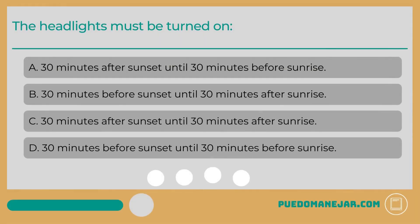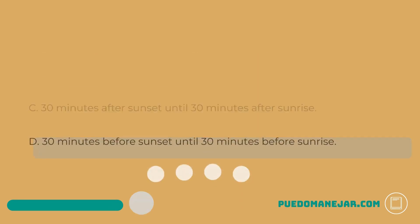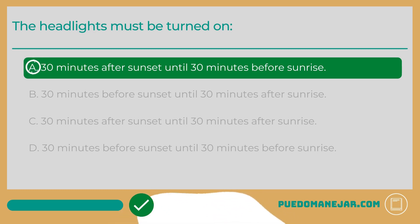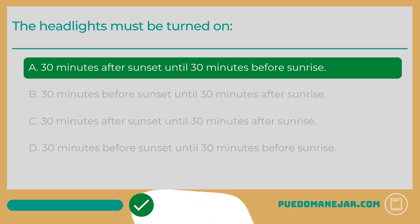The headlights must be turned on: A. 30 minutes after sunset until 30 minutes before sunrise. B. 30 minutes before sunset until 30 minutes after sunrise. C. 30 minutes after sunset until 30 minutes after sunrise. D. 30 minutes before sunset until 30 minutes before sunrise. The answer is B. Your vehicle's headlights help you see the road ahead and help other drivers see you. You'll need to turn the headlights on just before sunset until just after sunrise.